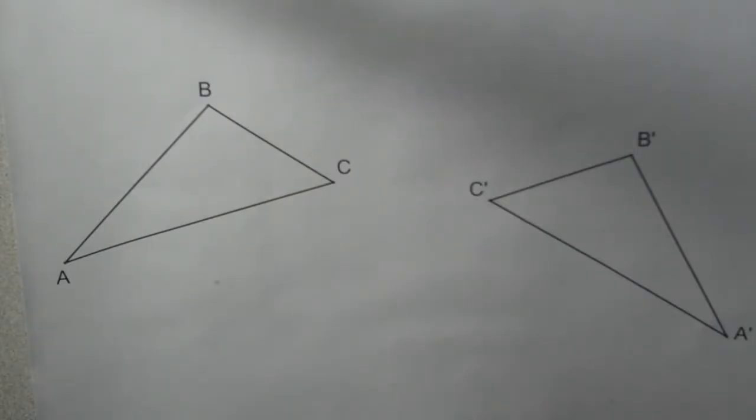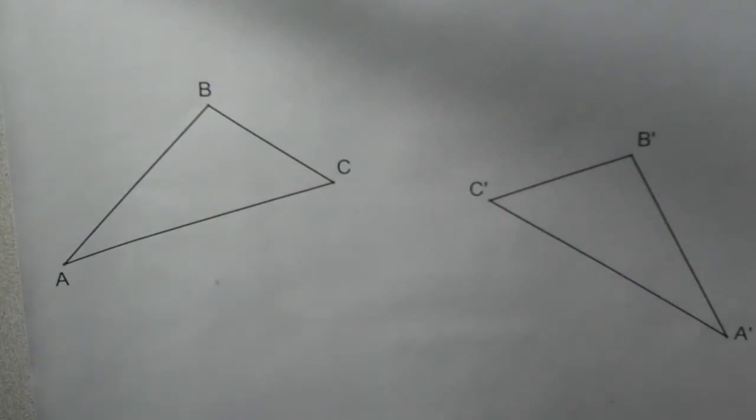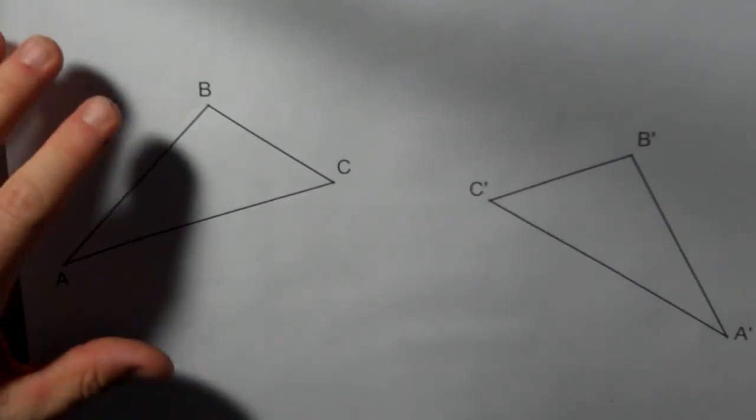So all you have to do is pick two corresponding points, meaning C and C prime or B and B prime, and construct the perpendicular bisector between those two points.